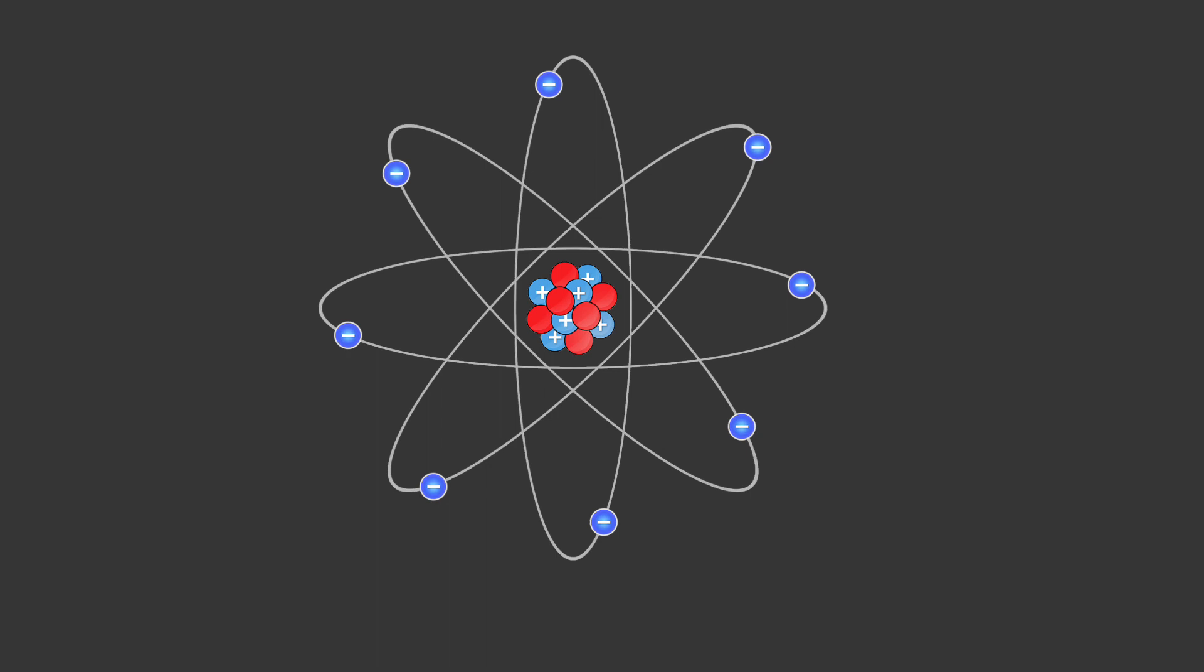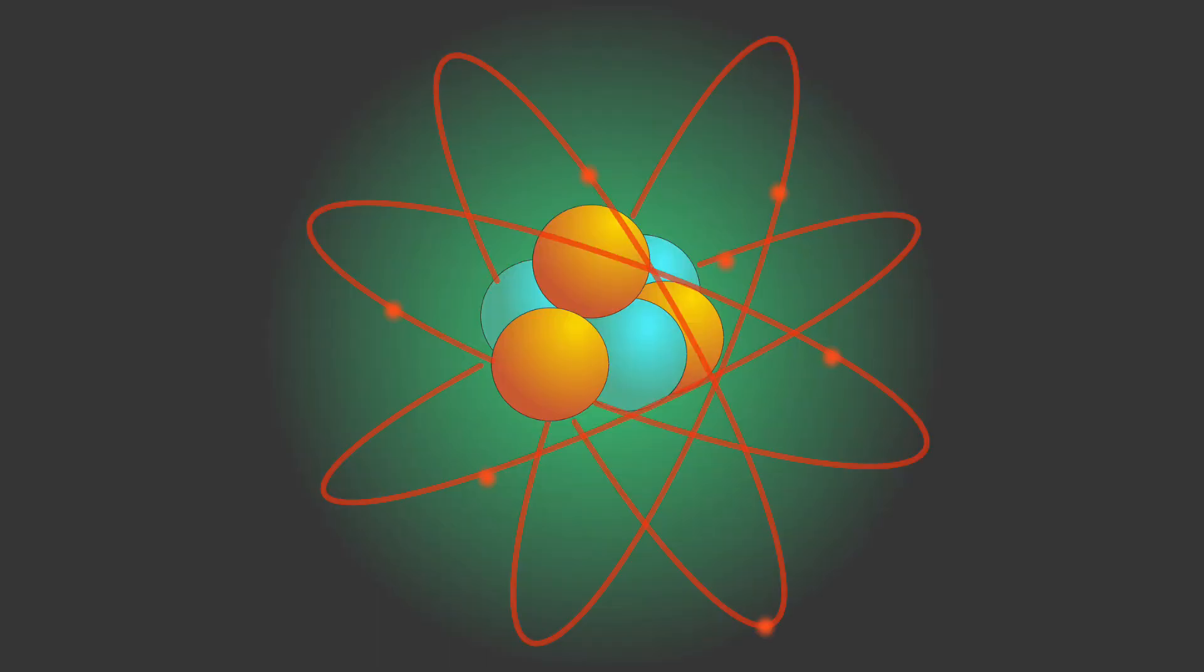Mass number: the total number of protons and neutrons in the nucleus of an atom (A). Atomic number: the number of protons in the nucleus of an atom (Z), determining the element's identity.